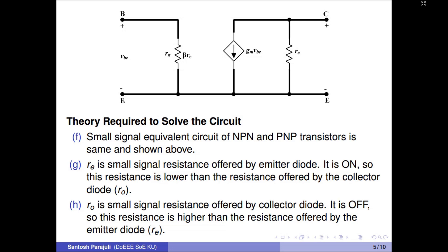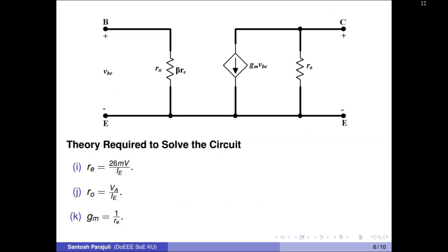The equivalent circuit has two resistors and one dependent current source. Gm is a factor which relates output collector current with input base-emitter potential difference. Re is the emitter diode resistance and Ro is related to the collector diode resistance. Ro arises due to the early effect and models the non-ideality of the dependent current source. Re should be much lower than Ro because the emitter diode is turned on and the collector diode is turned off. R-pi is DC beta times Re.